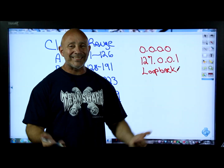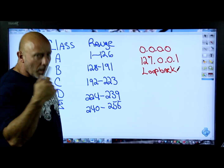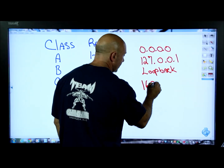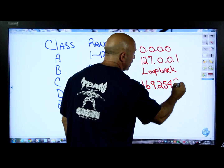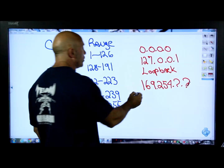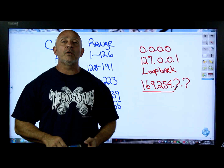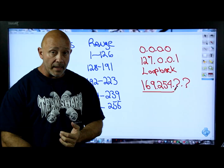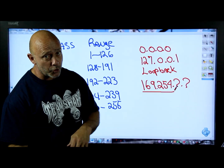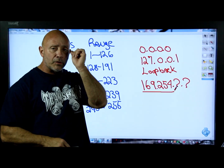Another address you should know is 169.254.x.x - the last two octets can be any number. If you go to command prompt, type ipconfig /all, and see 169.254, it means you're not getting an IP address. You didn't set it statically and you're DHCP-enabled but there's no DHCP server, so the protocol stack assigned itself a 169.254 address. That's called APIPA.